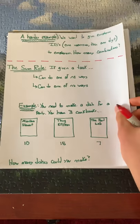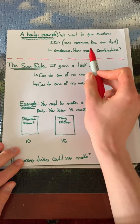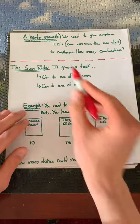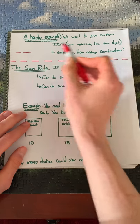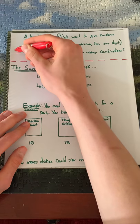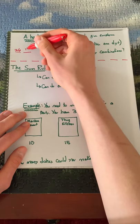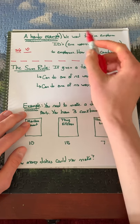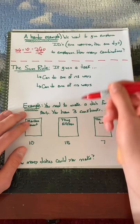Now let's go over a harder example. Suppose we want to give out employee IDs, where each ID consists of one uppercase letter followed by one digit. How many IDs can we make? The first character must be an uppercase letter, of which there are 26. The second character must be a digit, and there are 10 digits. Using the product rule, we get 26 times 10, which equals 260 total IDs.